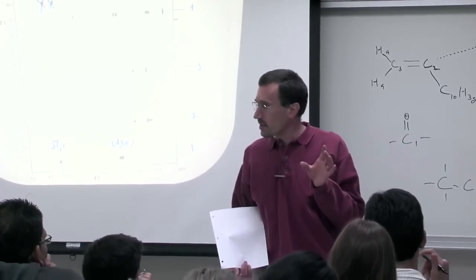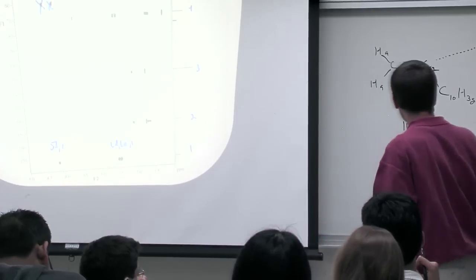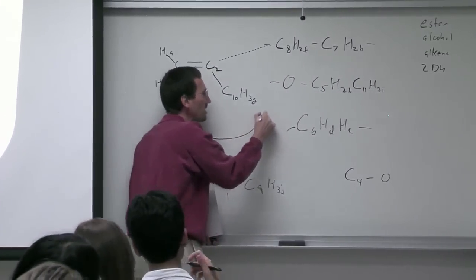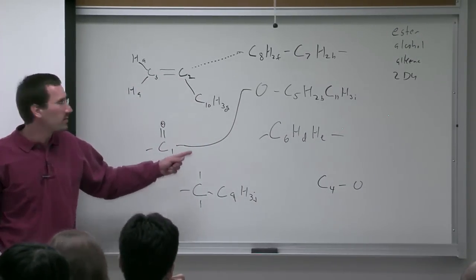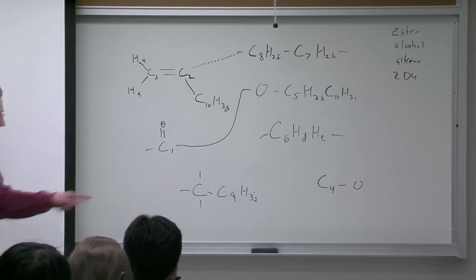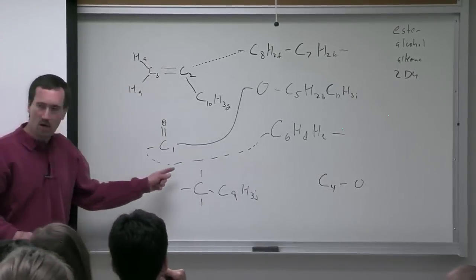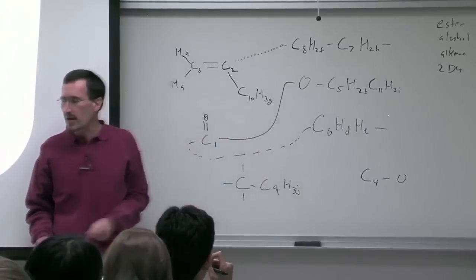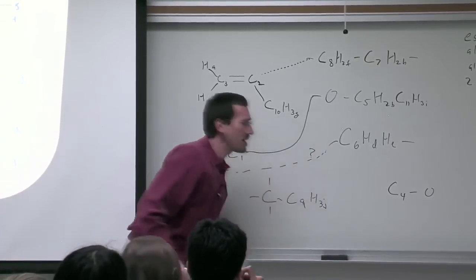INADEQUATE is like a carbon-carbon COSY, very powerful but impractical due to the low natural abundance of C13 — it's very atypical to have two C13s adjacent. The problem with HMBC is you've got both 2- and 3-bond coupling, so you're always second-guessing yourself. The 5B to carbon 1 cross peak is very nice because it provides a linkage — the 3-bond coupling goes through there so there can't be an intervening atom. Carbon 6 is less clear; I'll put a question mark there.